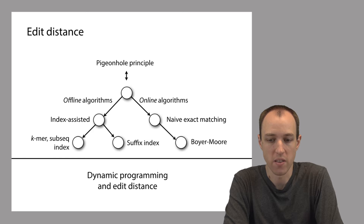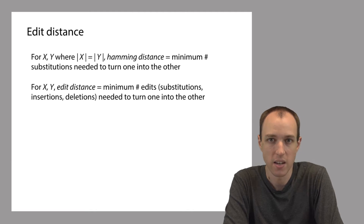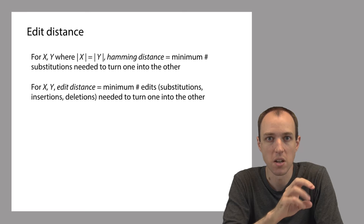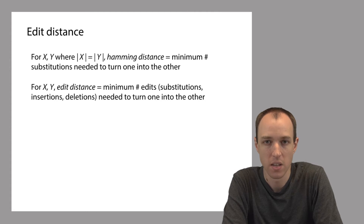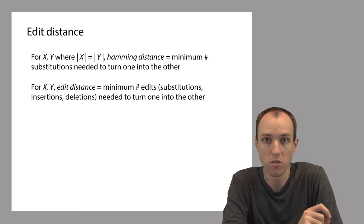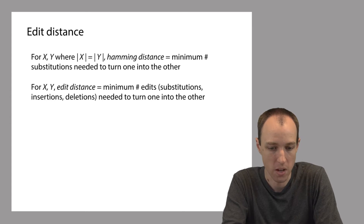We've seen two different ways of measuring the distance between a pair of strings. Hamming distance and edit distance. Hamming distance is the distance between two strings that are of equal length, and it equals the number of substitutions required to turn one of the strings into the other. Edit distance is defined as the minimum number of substitutions, insertions, or deletions required to turn one string into another.